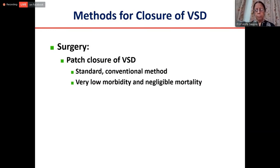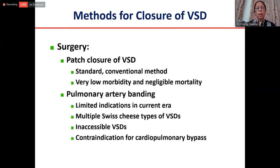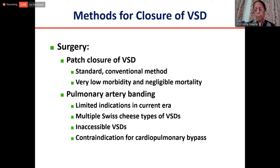Surgery remains the preferred method of VSD closure, with negligible morbidity and mortality. The only notable complication is complete heart block, occurring in less than 1% of perimembranous VSDs. In very small babies not thriving, if one is not comfortable putting them on cardiopulmonary bypass, pulmonary artery banding is an option — especially if VSDs are multiple or inaccessible. Band them, let the child grow, and at one or two years of age close the VSD and do de-banding. Currently, banding indications have become very few.